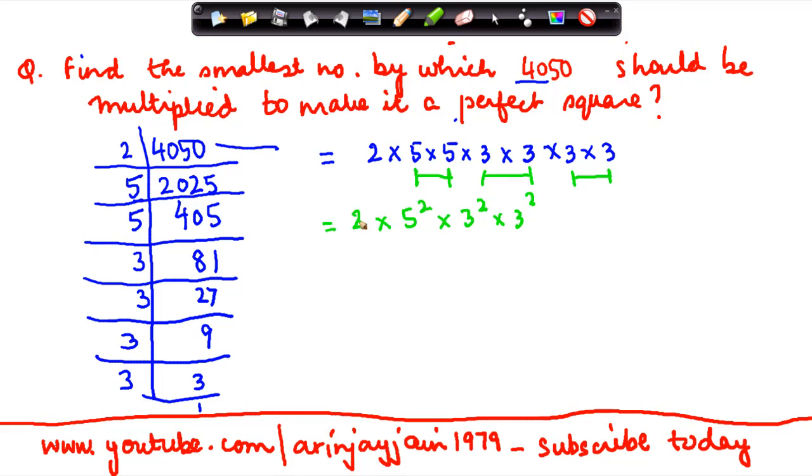But to make it a perfect square, each and every number out of this multiple has to be a square number, right? So I have to make this a square. And what do I do to make this a square? I need to multiply it by 2. If I multiply it by 2, then it will become 2 squared into the rest of the thing, and then it will be a perfect square. So the question was: by what number should this be multiplied to make it a perfect square? So I can multiply it by 2.